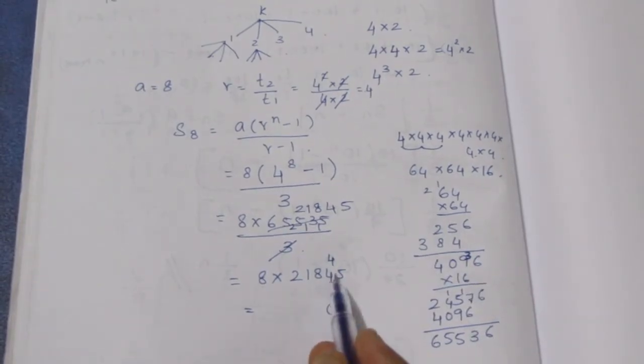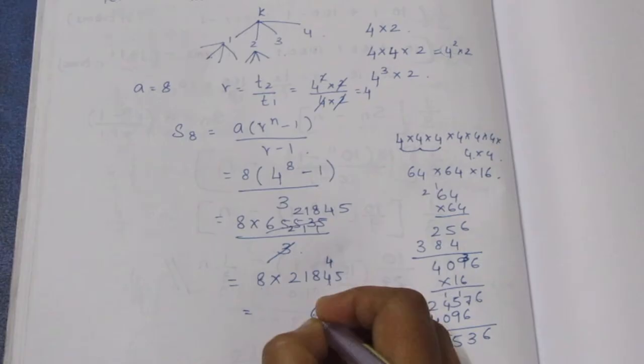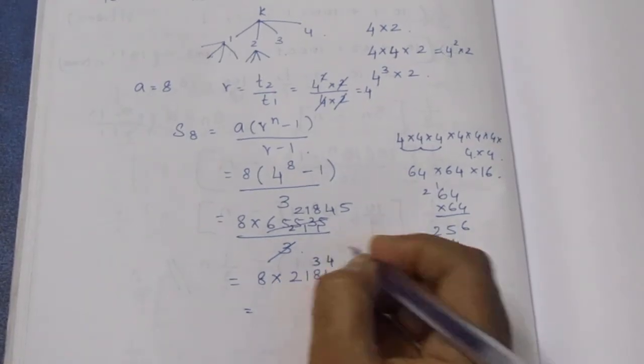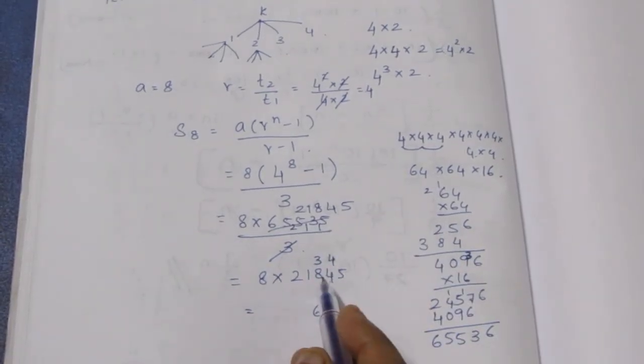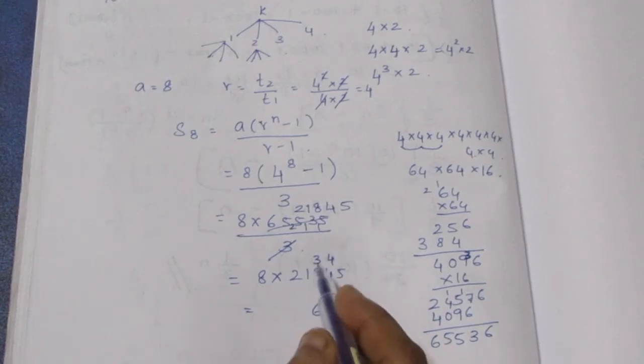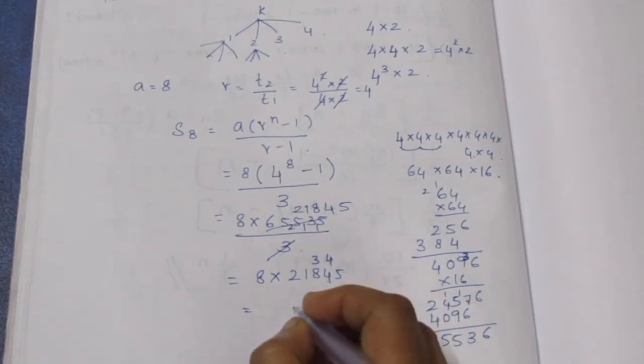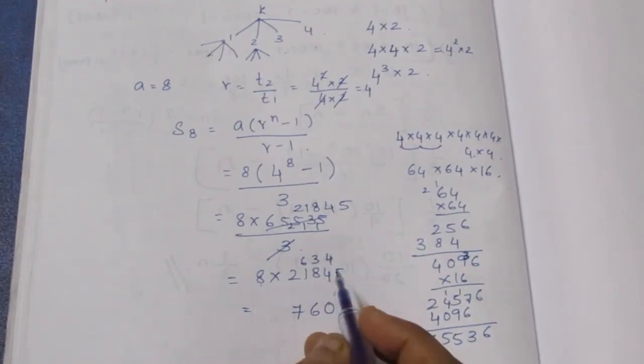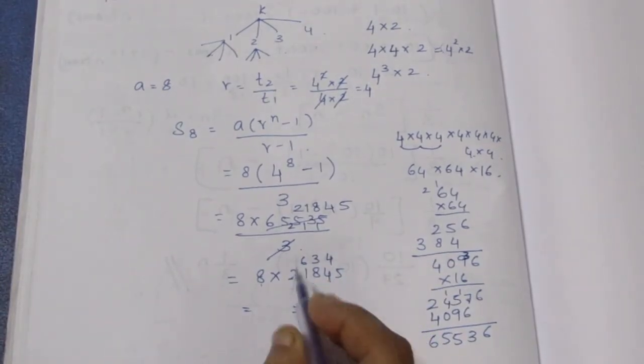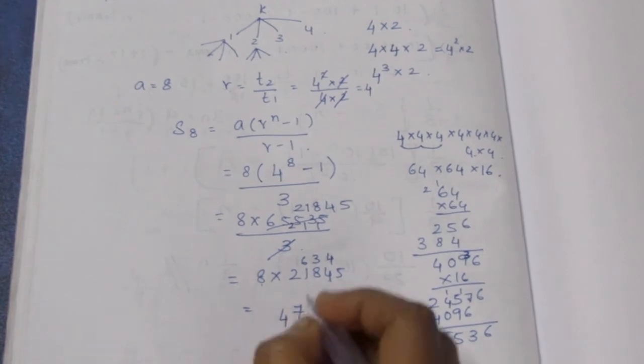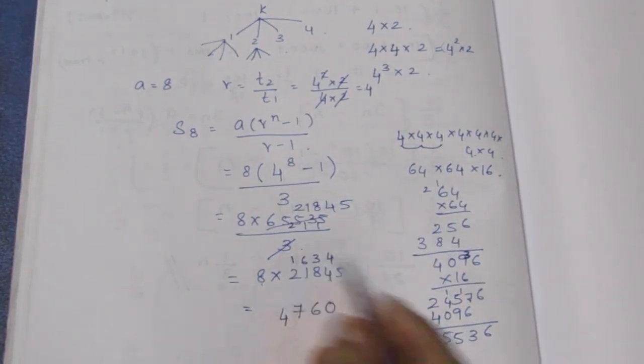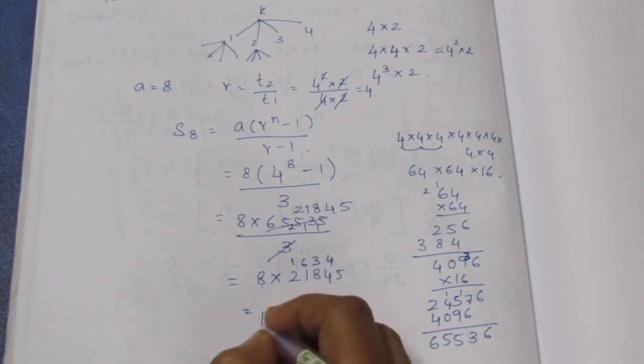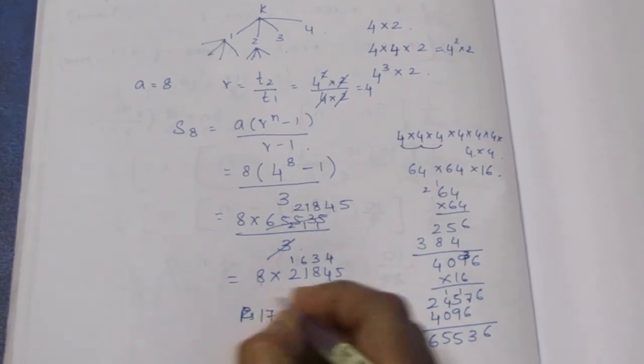8 4s are 32 plus 4 is 36. 8 8s are 64. 64 plus 3, 67, 67. 1 8 is 8 plus 6 is 14. 8 2s are 16 plus 1 is 17.